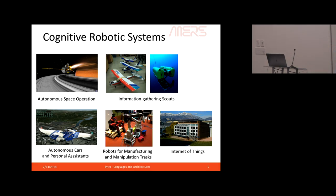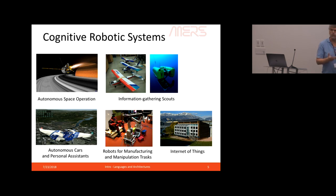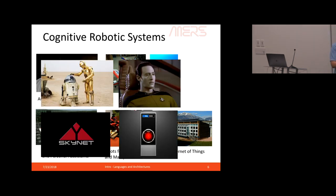These are the kinds of systems we've dealt with in my group over many years: space operations, information gathering systems in the air or under the sea, autonomous cars, robot collaborations in manufacturing, and the Internet of Things — physically embedded but immobile systems where you want to coordinate that structure. We also have highly autonomous versions of these that either inspire happiness or fear.